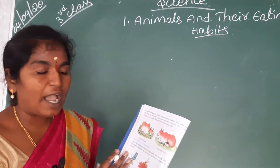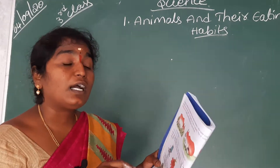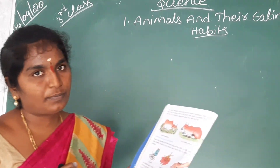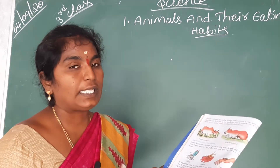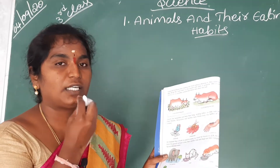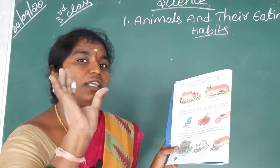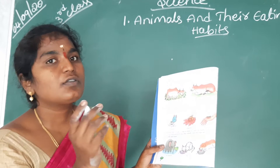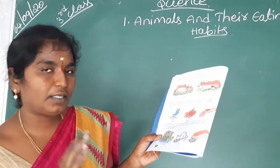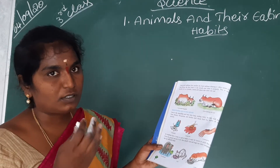Now here we are going to discuss about the body parts — which part takes care of feeding the food. If we are human beings, we take food with our hands and chew with our mouth. Like this, animals also use different types of their body parts to take food. So which animals use which body parts to feed — now we have to discuss that.